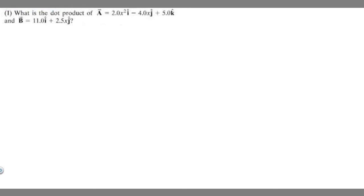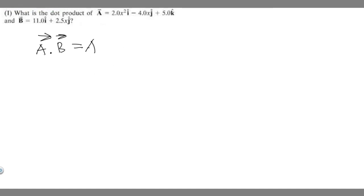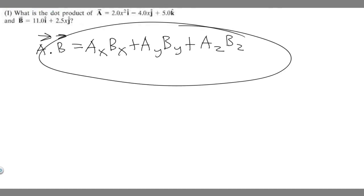So we're trying to find the dot product here. The way you're going to do that, you're going to follow this formula. The dot product of vector A and B is going to be equal to the x component of your first vector times the x component of your second vector, plus the y component of your first vector times the y component of your second vector, plus the z component of your A vector times the z component of your second vector.